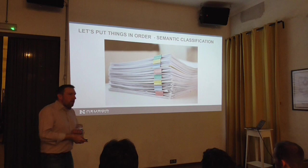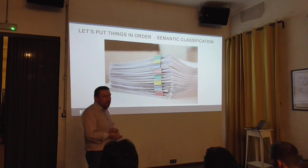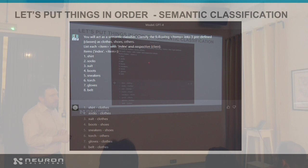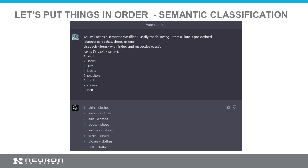Another example: semantic classification. What does a certain word or text mean? That's the question — please classify the text based on that. For example, I told the model that I'm going to give you some words and please classify them into predefined classes. That's important: in the case of classification, we talk about predefined classes. Like here — clothes, shoes, others.